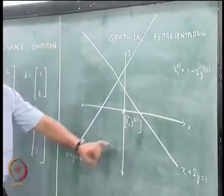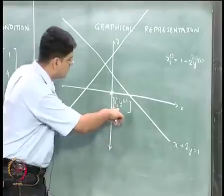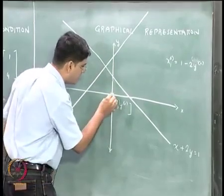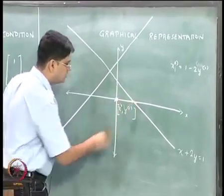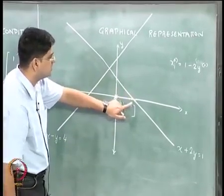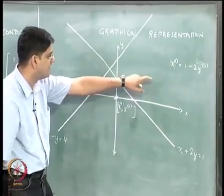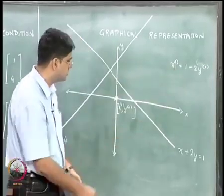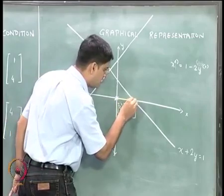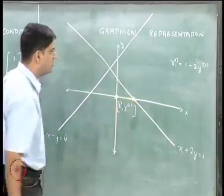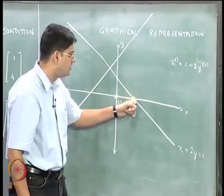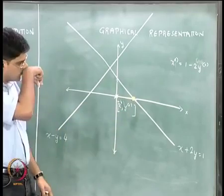Starting from the point (x0, y0) where y0 = 0, we move along the line x + 2y = 1 keeping y0 fixed, and we reach the point x1 = 1, y0 = 0. This is the first iterative step — we went from the point (x0, y0) to the point (x1, y0).